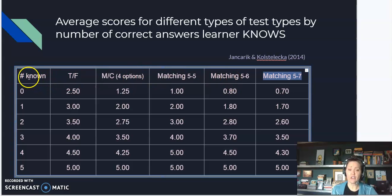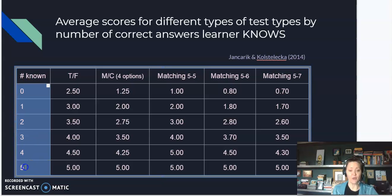Now what this chart shows is, given a certain number of correct answers known by the learner, for instance maybe the learner knows zero of the correct answers or maybe they know all five and of course anywhere in between. So this column shows in a situation where the learner knows one out of every five, two out of every five, three out of every five, four out of every five.